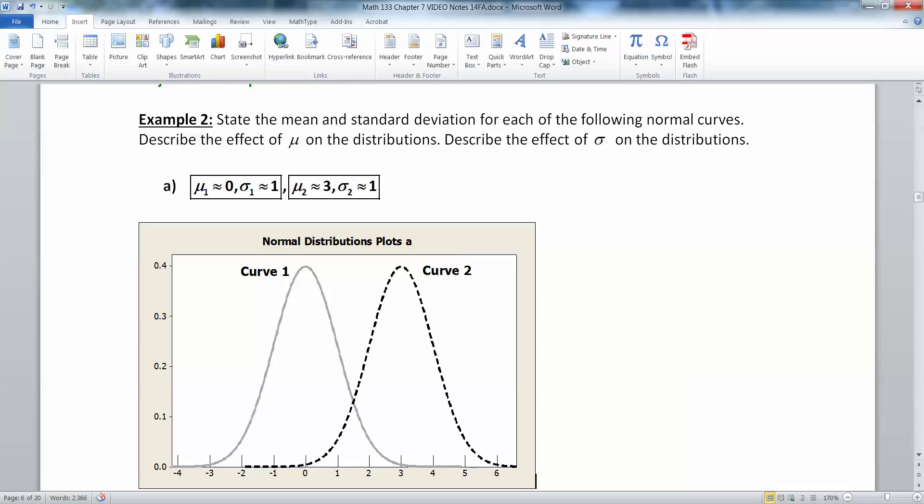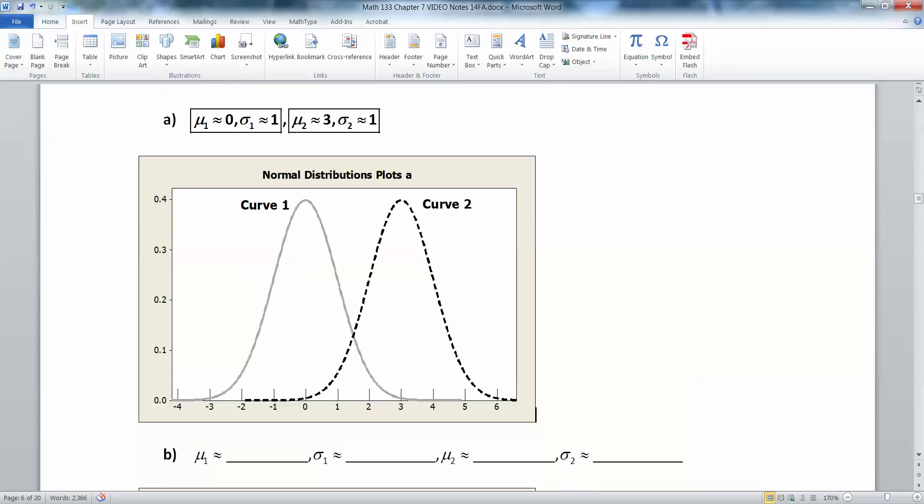What's different about the two curves is their center. The center on the gray curve is at zero. The center on the dashed curve is around three. So their centers are shifted apart from each other, but their standard deviations are not. They are identical because they have the same lovely shape.